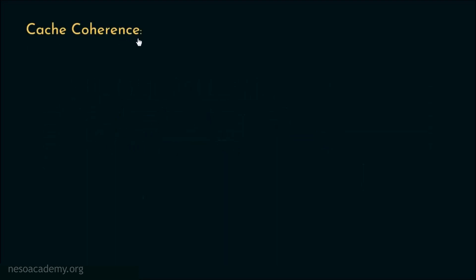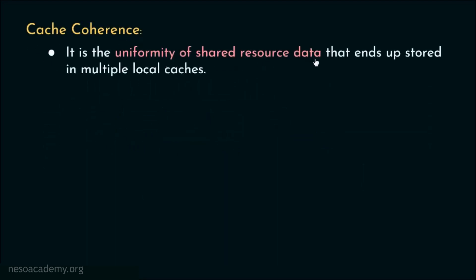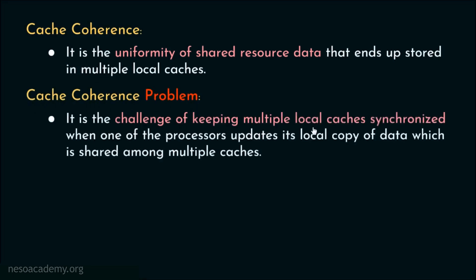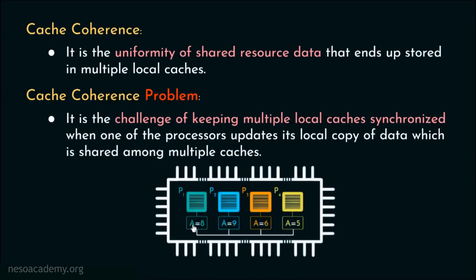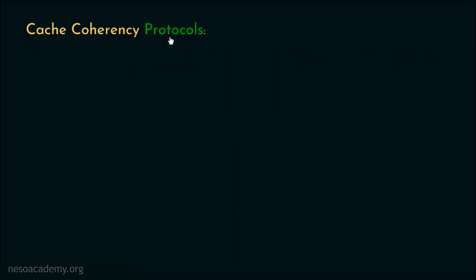So basically, what is cache coherence? It is the uniformity of shared resource data that ends up stored in multiple local caches — we need to maintain that uniformity. The cache coherence problem is the challenge of keeping multiple local caches synchronized when one of the processors updates its local copy of data which is shared among multiple caches. The challenge is to keep them synchronized, and as a solution we propose cache coherence protocols — setting ground rules so that we can achieve coherence among all the private caches.